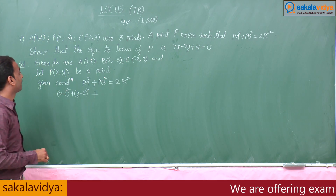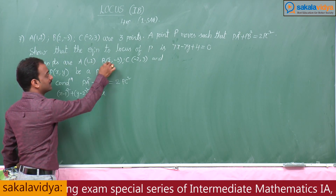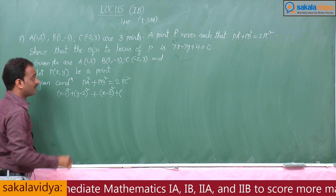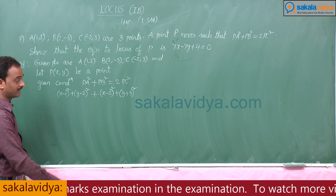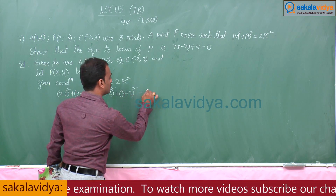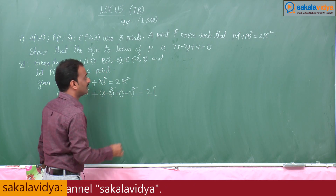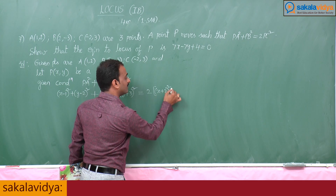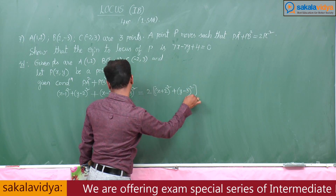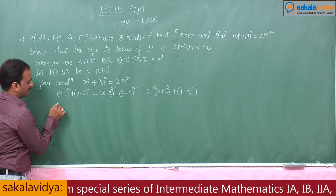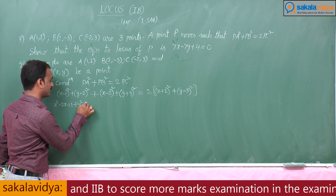Now we write PB²: with P(x, y) and B(2, -3), PB² = (x - 2)² + (y + 3)². This equals 2 times PC². With P(x, y) and C(-2, 3), PC² = (x + 2)² + (y - 3)².